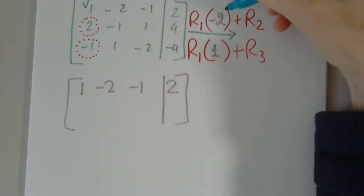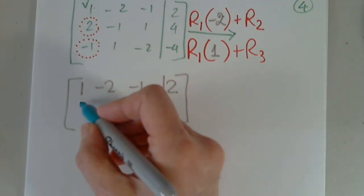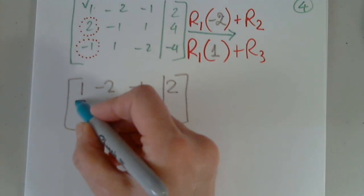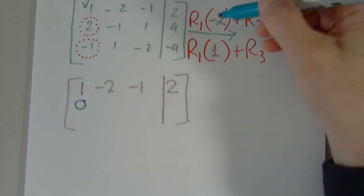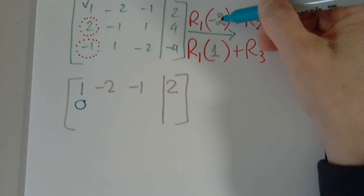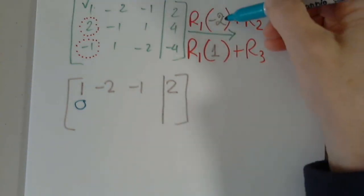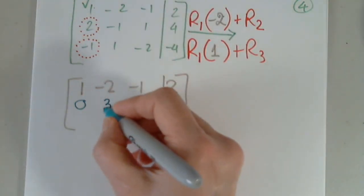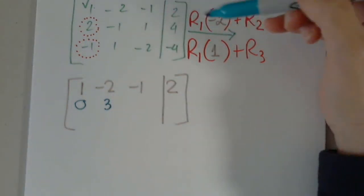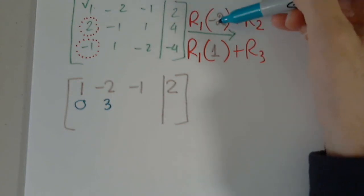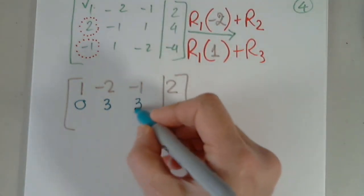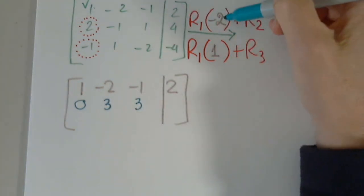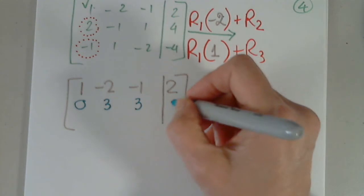So one times negative two plus two — how much? Negative two times negative two, which is four minus one, three. Negative one times negative two is two, plus one, three. Finally, two times negative two is negative four, plus four, zero.